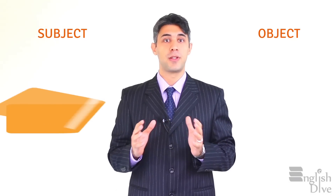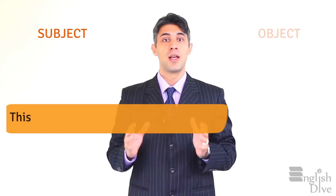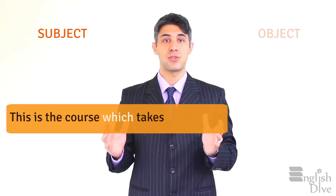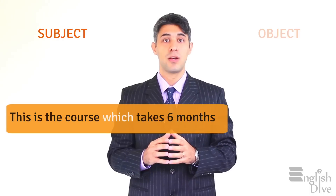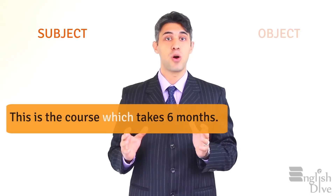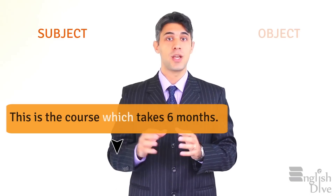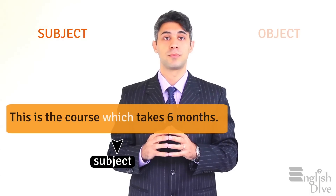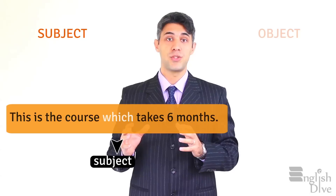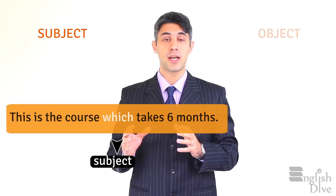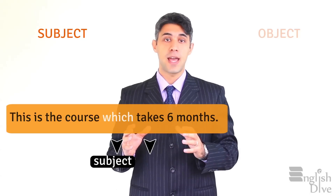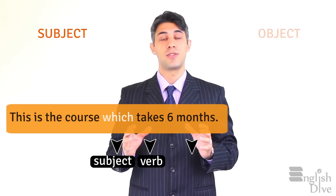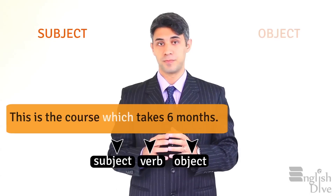For example, in the sentence 'This is the course which takes six months,' the relative pronoun 'which' is the subject of the relative clause. 'Which' is the subject, 'takes' is the verb, and 'six months' is the object.